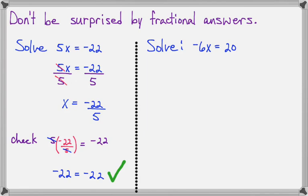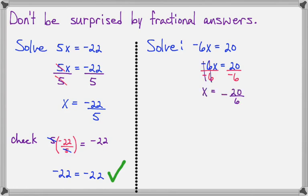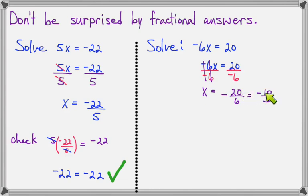Now let's solve negative 6x equals 20. The negative 6 is what I want to cancel out, and I'm going to divide both sides by negative 6. The 6s and the negatives will cancel here and leave us with just x on the left side. And 20 divided by negative 6 makes a negative fraction — notice that I've just moved the negative out from the bottom of the fraction. This is not a whole number, but it will reduce. 20 over 6 — both numbers can be divided by 2 — so 20 divided by 2 is 10, and 6 divided by 2 is 3, so our answer reduces to negative 10 over 3.